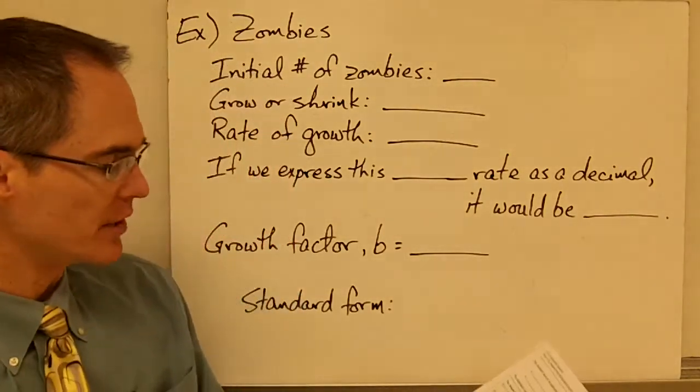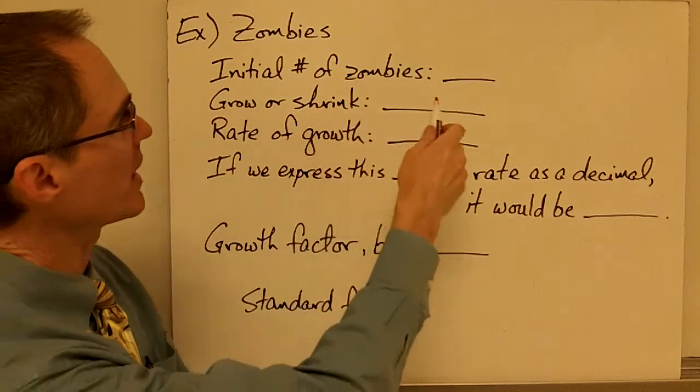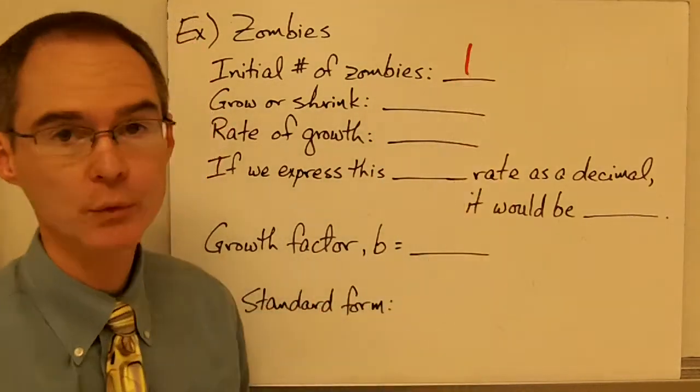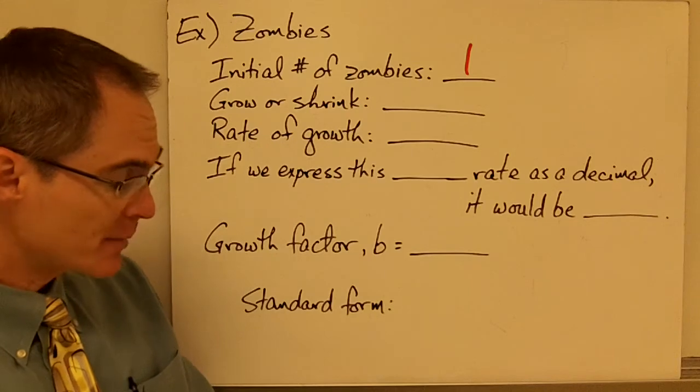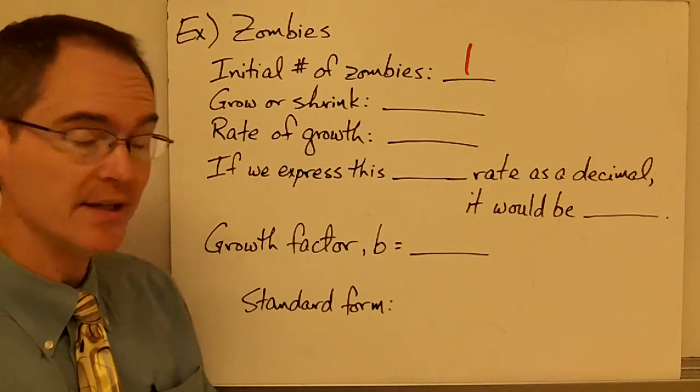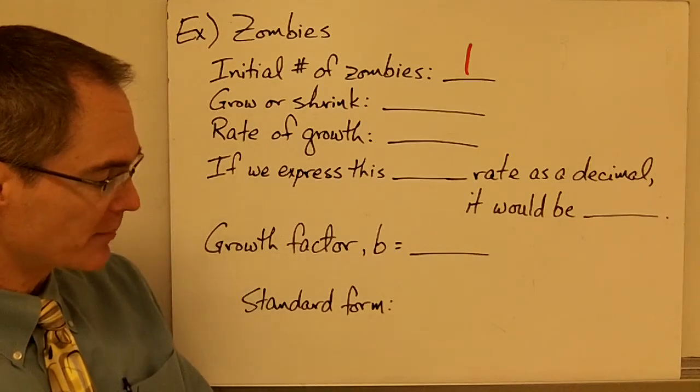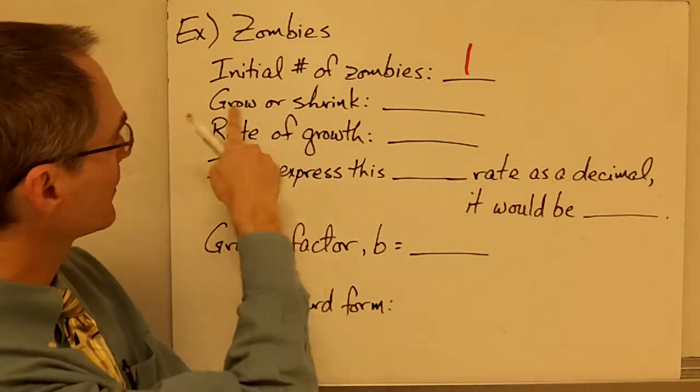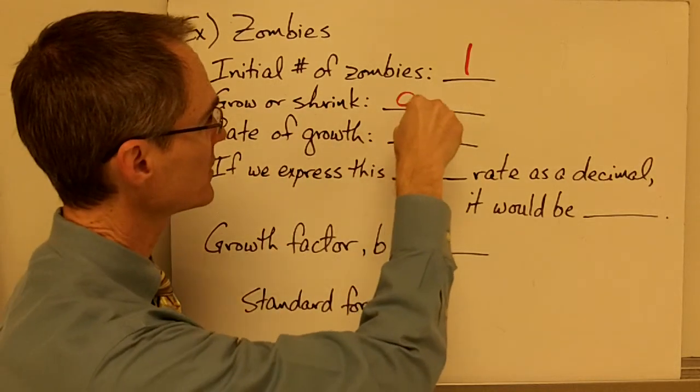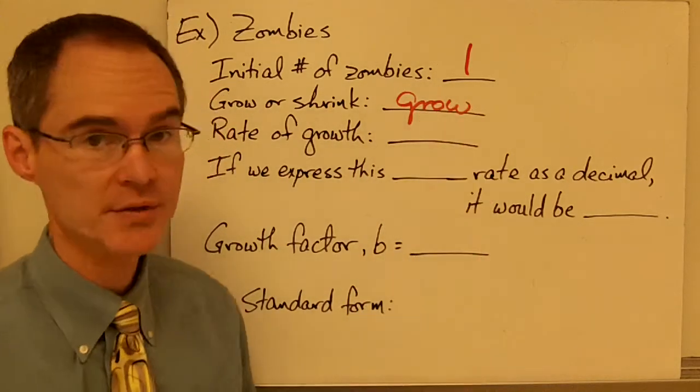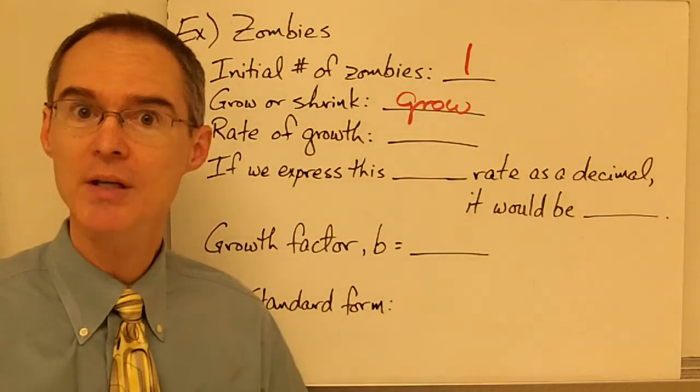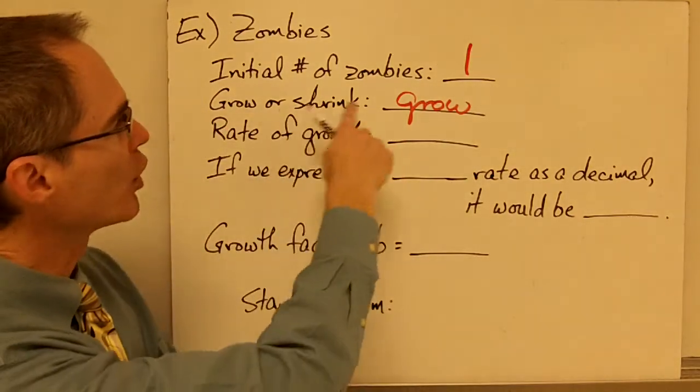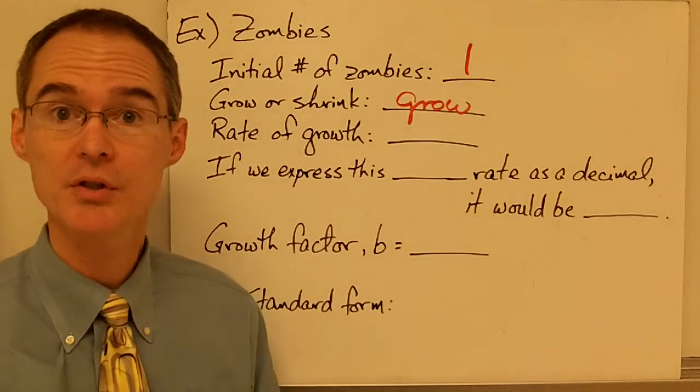Okay, what was the initial number of zombies? Well, our initial number of zombies is one. We start out with one zombie. Assuming that no one has yet figured out how to kill a zombie, would you expect the number of zombies to grow or shrink? Well, I'm going to expect that the number of zombies is going to grow since every zombie is biting more zombies, and so we get more and more zombies every day. So we're going to be talking about growth, an exponential growth situation.